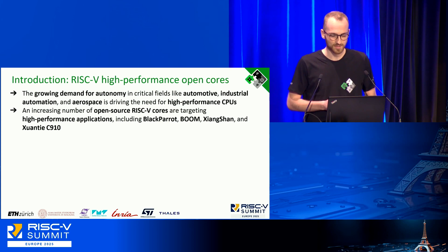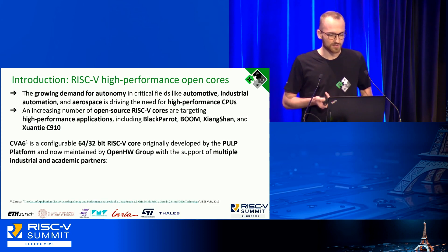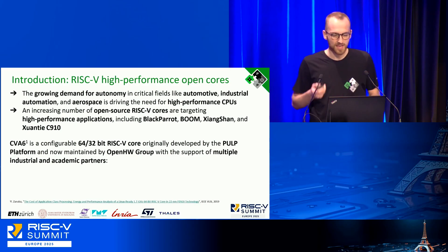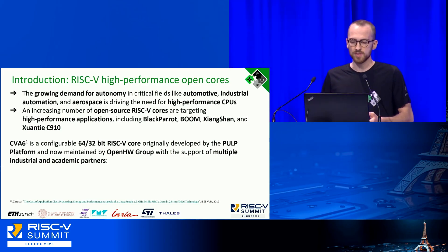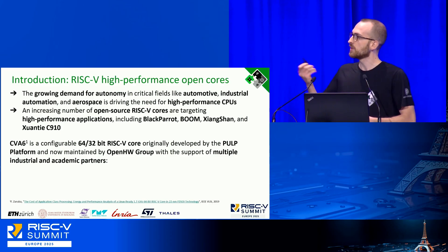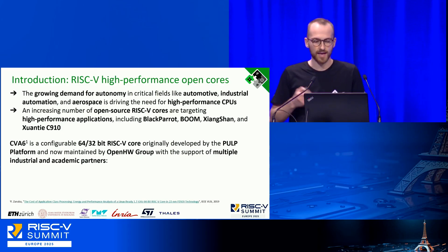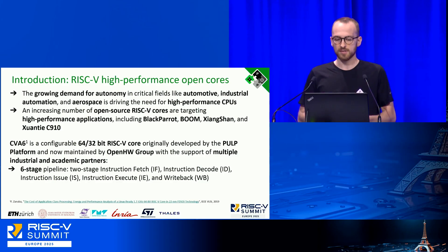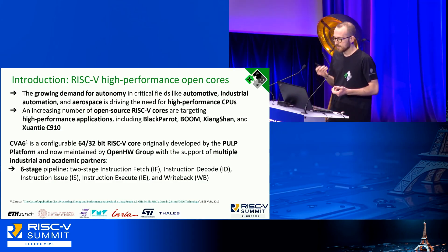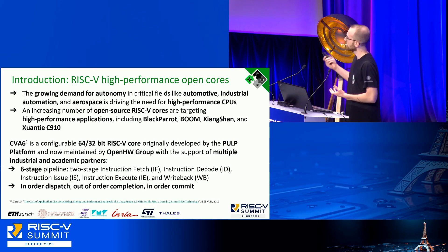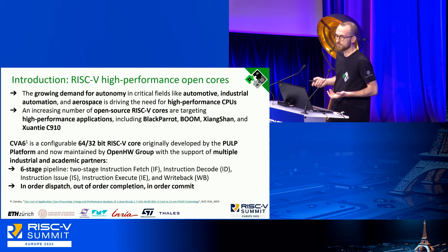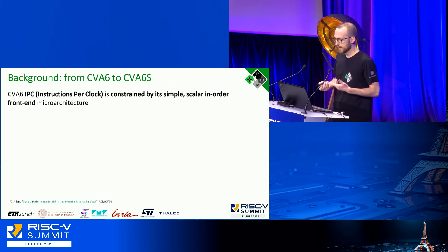Among those solutions, we have CVA6, which you've probably heard already. It's a configurable 64 or 32-bit RISC-V core originally developed by the PULP research group, now maintained and developed by the OpenHW Group with many industrial and academic partners. It is a six-stage pipeline with in-order dispatch, out-of-order completion, and in-order commit — a scalar structure which is somewhat limited in the IPC it can provide.